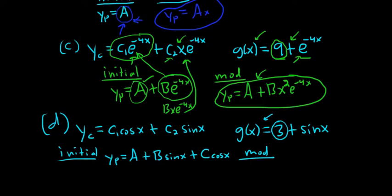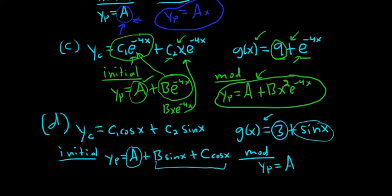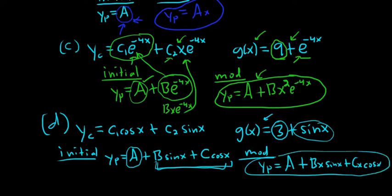Now we'll do our modified. We had two separate guesses — one for the 3 and one for the sine. For A: no repetition, so A is good. But for the sine and cosine part: we have repetition between the sines and cosines in Yc. So we have to multiply the whole thing by x — so it would be plus Bx sine x plus Cx cosine x. Because there's repetition on the entire trig pair, that's the modified.